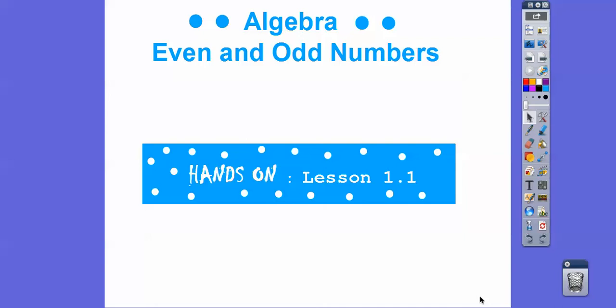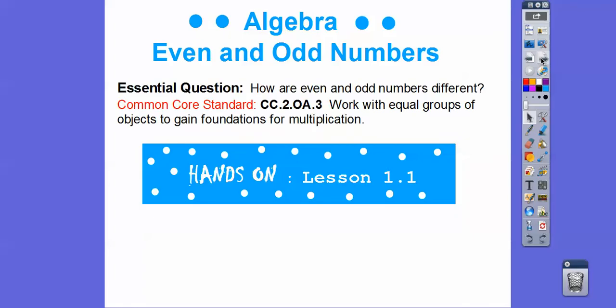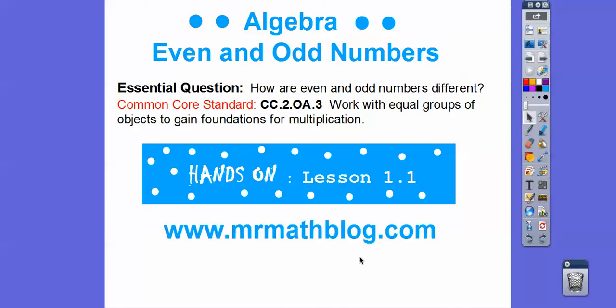Hey everybody, I'm Mr. Math Blog, and I'm going to be helping you this year in second grade. In this lesson, it's the beginning of algebra — it talks about even and odd numbers. This is lesson 1.1 in our textbook. The essential question is: how are even and odd numbers different from each other? All of your lessons can be found at www.mrmathblog.com — just click second grade.